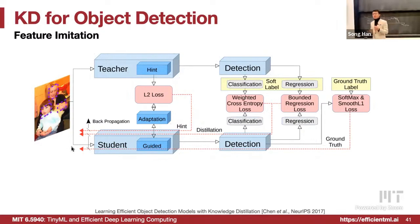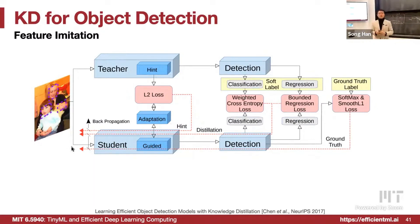Welcome back. Let's continue talking about knowledge distillation applied to different tasks to solve real-world problems. Let's start with object detection — trying to find the bounding box for different objects. You not only want to give the class, but also tell where the object is, maybe with a bounding box for the location.